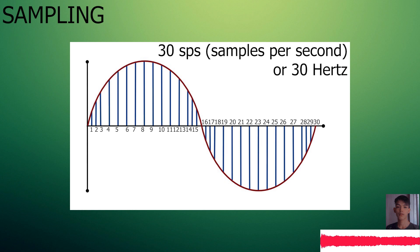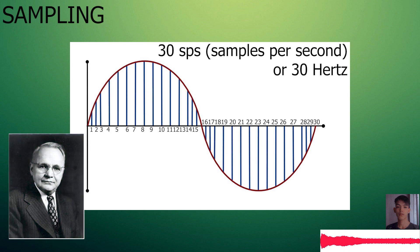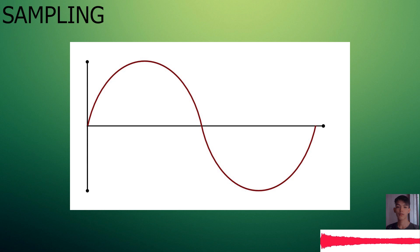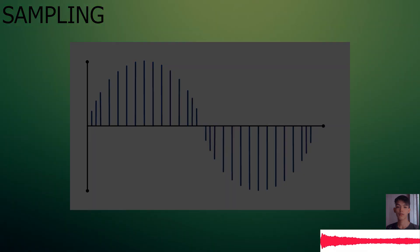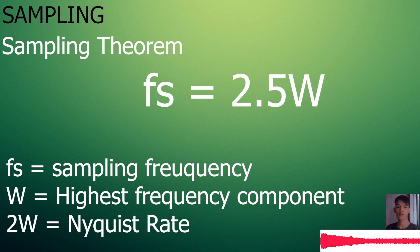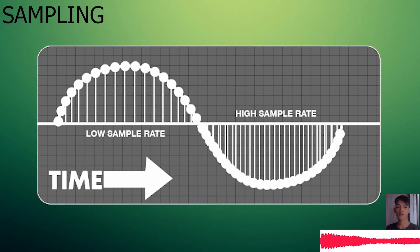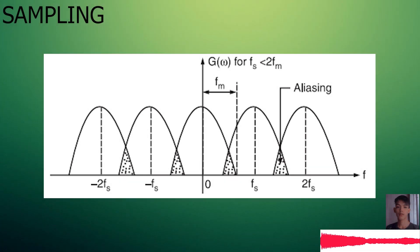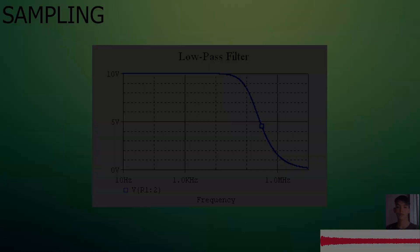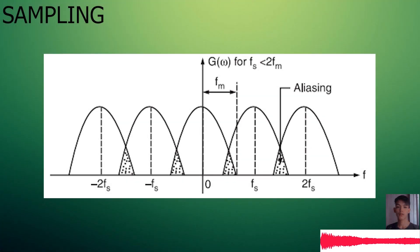The number of samples per second is called the sampling rate. In signal processing, the Nyquist frequency, named after Harry Nyquist, is a characteristic of a sampler which converts a continuous function or signal into a discrete sequence. The sampling theorem essentially says that a signal has to be sampled at least twice the highest frequency of the original signal, or better, two and a half times. The higher the sampling rate, the closer you are to the original signal. To avoid aliasing, we have to put a low-pass filter to filter out high frequencies not within the Nyquist frequency. Without a low-pass filter, aliasing would occur, causing a distortion of the signal.